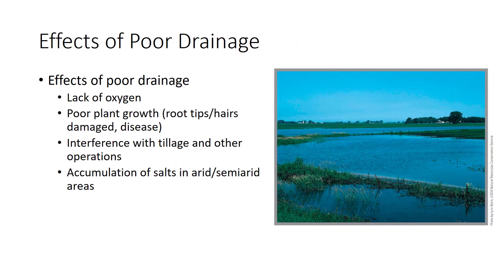Where the water table or capillary fringe intrudes into the root zone, soil wetness can create anaerobic conditions that deprive roots of oxygen. For most plants, rapidly growing points such as root tips and root hairs are quickly damaged, and root rotting organisms attack the roots. Water and nutrient absorption suffers and toxic minerals build up in the soil. Rooting will be limited to the aerated zone above the fringe, limiting the growth of upland crops such as corn and apple trees and most common landscape plants.